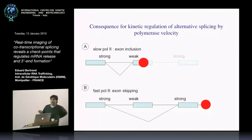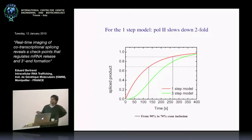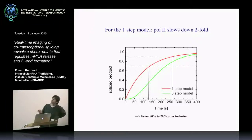This way you can regulate alternative splicing by the rate of elongation. Alberto Kornblihtt recently showed in a paper in Cell that during stress, when you stress the cell you slow down the polymerase, and that gives you global changes in alternative splicing. Now if we look at the kinetic view of the splicing reaction and compare the two models: with a single-step model, when we accelerate the polymerase by a factor of 2, we only go from 90% to 70% splicing at the first site — a poor regulation of splicing.